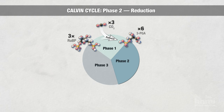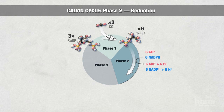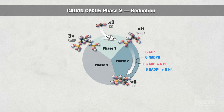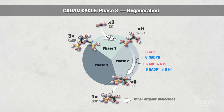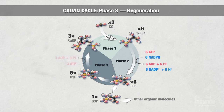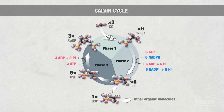In the second phase, the organic molecules accept electrons, a process known as reduction. The six molecules of 3-PGA use six molecules of ATP and six molecules of NADPH, which store energy from the light reactions, to generate six molecules of G3P. The G3P molecules contain more electrons and are higher in potential energy than 3-PGA. One molecule of G3P exits the cycle and can be used to make other organic molecules. In phase three, the regeneration phase, a large set of reactions use the other five molecules of G3P and energy from three molecules of ATP to produce three molecules of RuBP. With RuBP reformed, the process can start again.